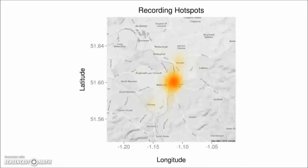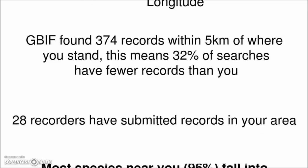Then we get the map, pulling in data from Google for mapping, with a kernel density plot — plotting the density of records in this area using a heat map, done in the programming language R. What we see here is quite interesting: there's a real hotspot right in the center, which is actually centered right on the Biological Records Centre, the organization where I work, specializing in managing species occurrence data. Then we get more natural language statements: 'GBIF has found 374 records within 5 kilometers of where you stand. This means 32% of searches have fewer records than you.' And we find out that 28 recorders have been submitting records in this area.